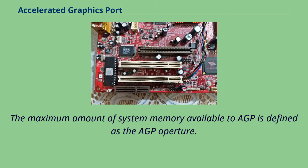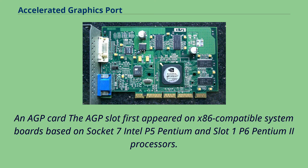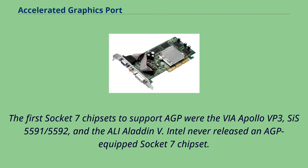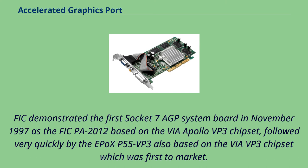The maximum amount of system memory available to AGP is defined as the AGP aperture. The AGP slot first appeared on x86-compatible system boards based on Socket 7 Intel P5 Pentium and Slot 1 P6 Pentium II processors. Intel introduced AGP support with the i440LX Slot 1 chipset on August 26, 1997, and a flood of products followed from all the major system board vendors. The first Socket 7 chipsets to support AGP were the VIA Apollo VP3, SIS 5591/5592, and the Ali Aladdin V; Intel never released an AGP-equipped Socket 7 chipset. FIC demonstrated the first Socket 7 AGP system board in November 1997 as the FIC PA-2012, based on the VIA Apollo VP3 chipset, followed very quickly by the Epoch's P55 VP3, also based on the VIA VP3 chipset, which was first to market.